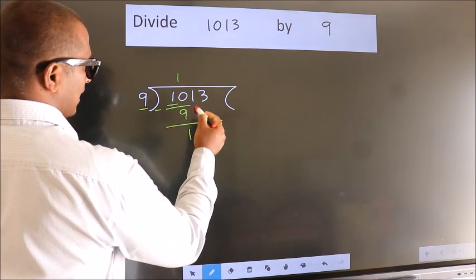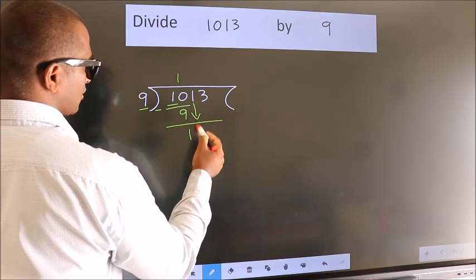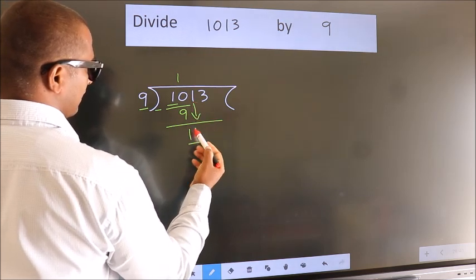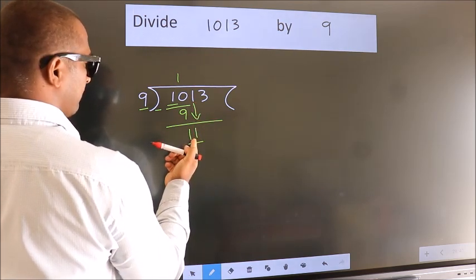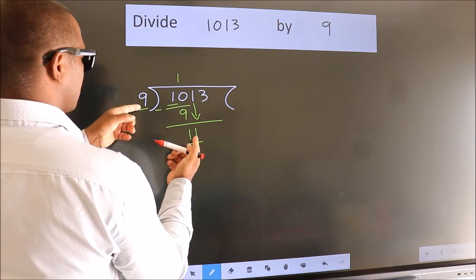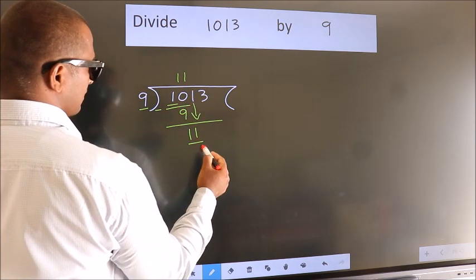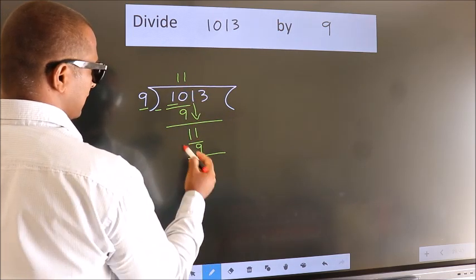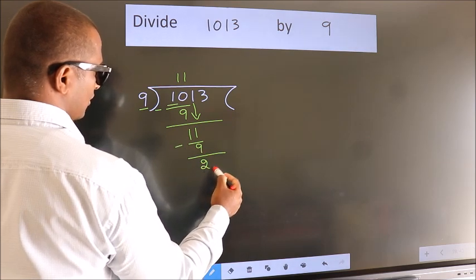After this, bring down the beside number. So 1 down. So 11. A number close to 11 in the 9 table is 9 ones, 9. Now we subtract. We get 2.